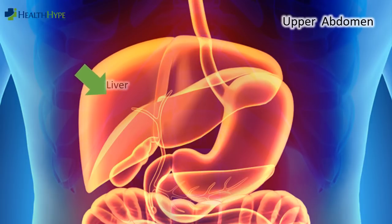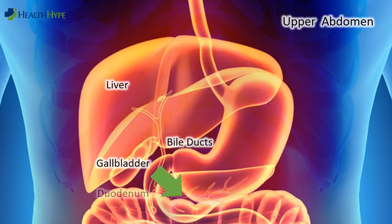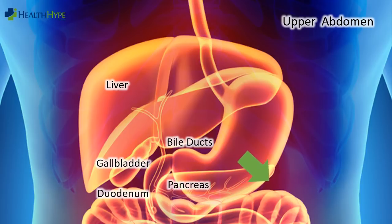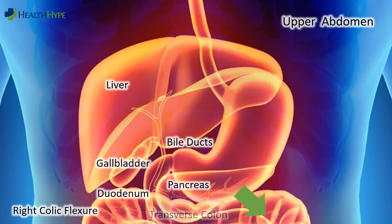The largest organ in the upper right is the liver, and specifically the right lobe of the liver. Underneath the liver lies the gallbladder, along with its network of bile ducts. These ducts empty bile into the first part of the small intestine known as the duodenum. Alongside it lies the head of the pancreas, which extends to the left. Also on the right is the right bend of the colon, known as the right colic flexure, and the transverse colon continues across the abdomen.